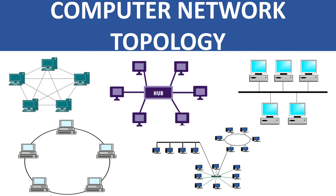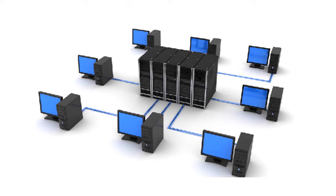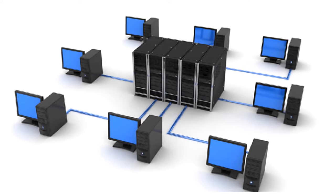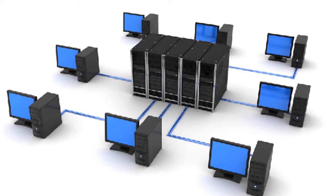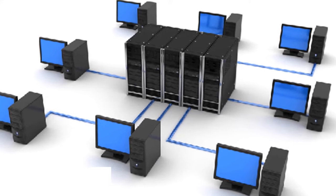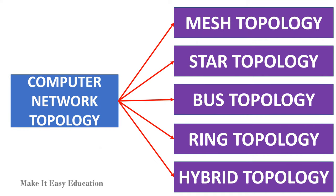Computer network topology. The arrangement of networks that represents how the computers are connected to each other is known as topology. There are five types of topology: mesh topology, star topology, bus topology, ring topology, and hybrid topology.